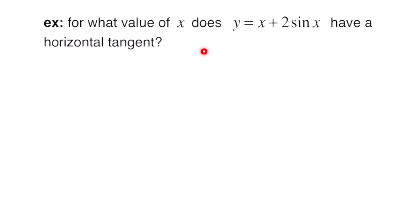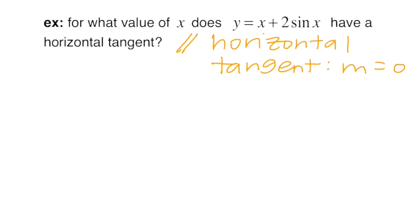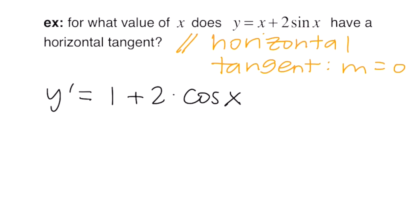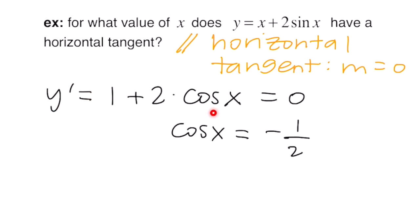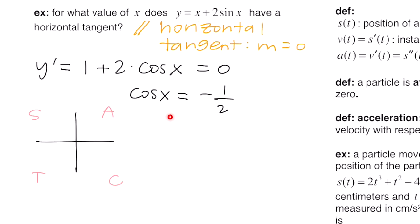This example asks: for what value of x does y equals x plus 2 sine x have a horizontal tangent line? The key is that a horizontal tangent line means slope equals 0. We take the derivative: the derivative of x is 1, and the derivative of 2 sine x is 2 cosine x. Setting the derivative equal to 0, we isolate cosine: subtract 1 and divide by 2, giving cosine of x equals negative 1/2.